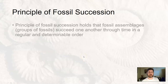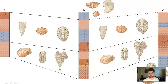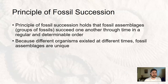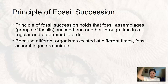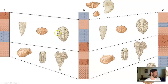That all led to the principle of fossil succession, which holds that fossil assemblages — groups of fossils — succeed one another through time in some regular and determinable order. Because different organisms exist at different times, each fossil assemblage is unique. What I find in this layer is going to be different from what I find in a higher layer as I go closer in time to us. Each assemblage has a distinctive aspect compared with younger or older fossil assemblages, and that's how we can figure out the relative age of these rock layers and connect them across distances.